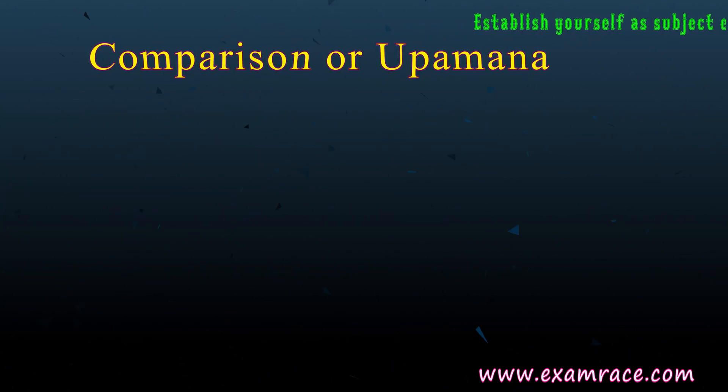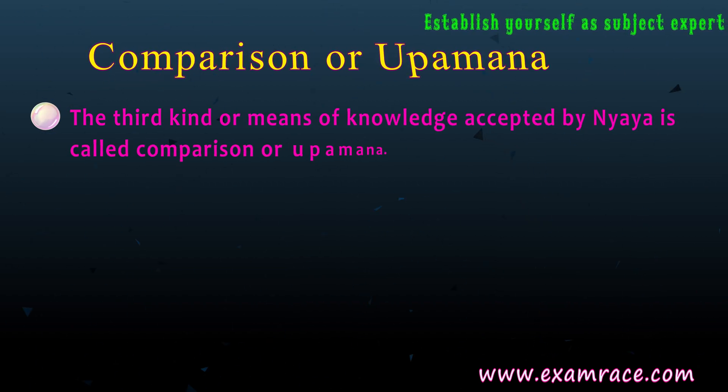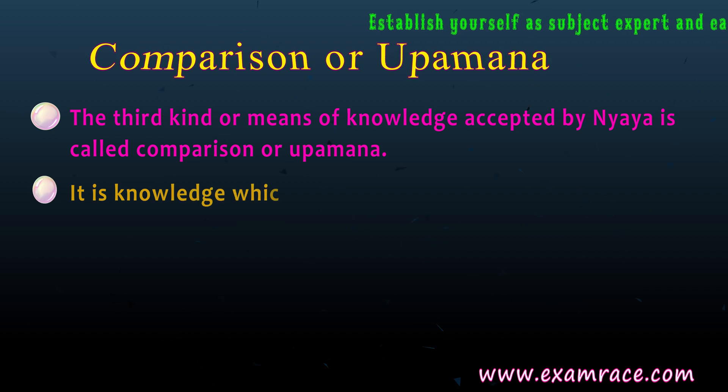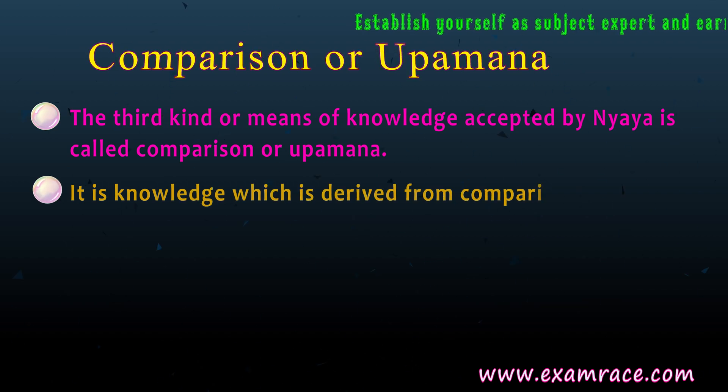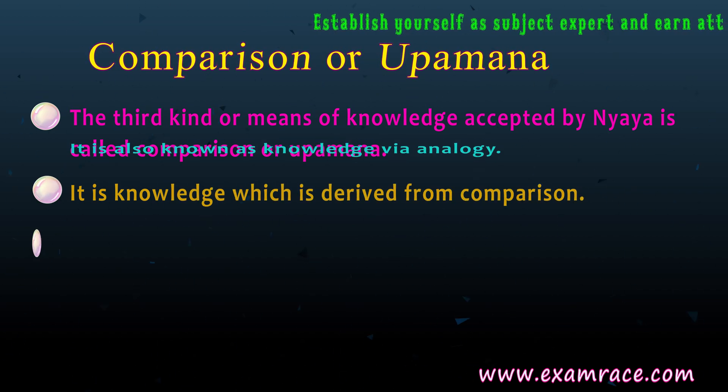Comparison or Upamana: The third means of knowledge accepted by Nyaya is called Comparison or Upamana. It is knowledge which is derived from comparison. It is also known as knowledge via analogy. It is defined as knowledge of the relation between a word and its meaning or denotation. It is produced by resemblance or similarity.